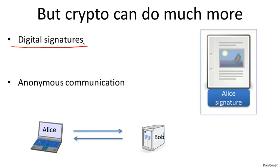Just to give you a hint, digital signatures work by making the signature a function of the content being signed. An attacker who tries to copy my signature from one document to another won't succeed because the signature on the new document won't be the proper function of the data in the new document, and as a result, the signature won't be verified. We'll see exactly how to construct digital signatures later on and prove that those constructions are secure.